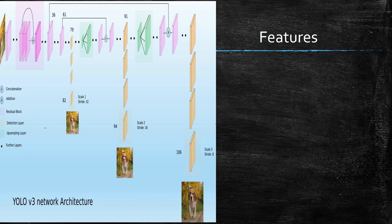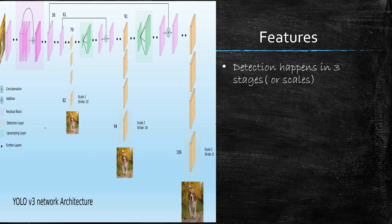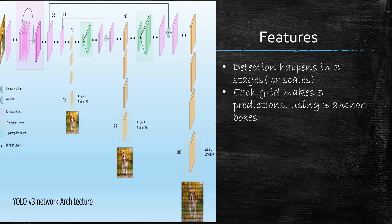The first key feature: detection happens at 3 stages or scales. Each grid cell makes 3 predictions using 3 anchor boxes — meaning the image is divided into multiple grid cells (e.g., 13×13) and each cell predicts 3 bounding boxes. Anchor boxes are a concept introduced in YOLO version 3. In previous versions the network predicted box height and width directly, but here there are predefined heights and widths called anchor boxes. With 3 anchor boxes per scale and 3 scales, that gives 9 anchor boxes total.